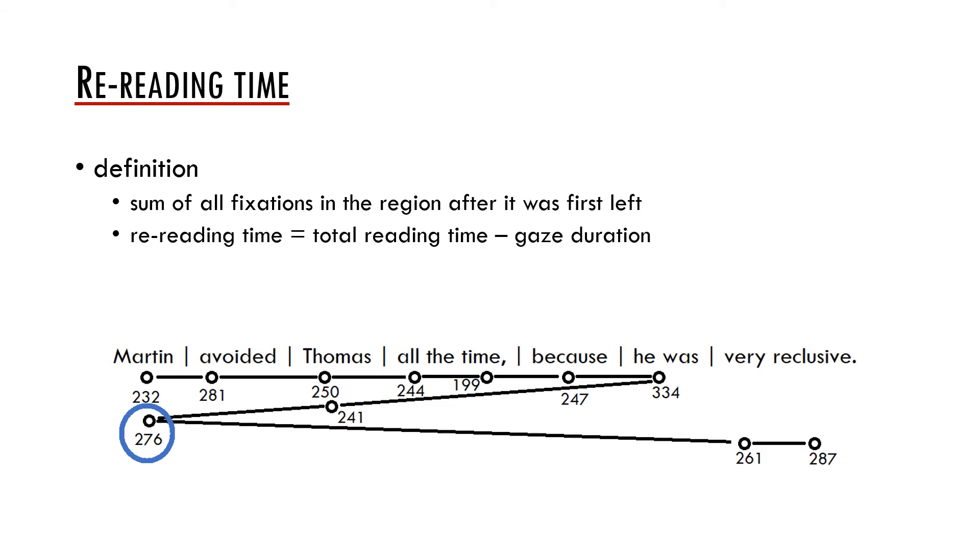Another measure is re-reading time. This is the sum of all fixations in the region after it was first left. In other words, we can get the re-reading time if we subtract gaze duration or first pass reading time from the total reading time. In the example below, the re-reading time for the region Martin is 276 milliseconds. This is a measure of the later processing difficulty.